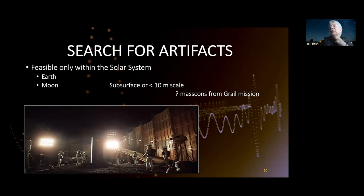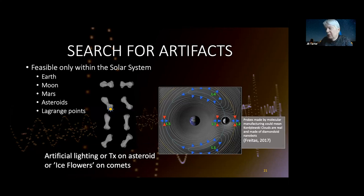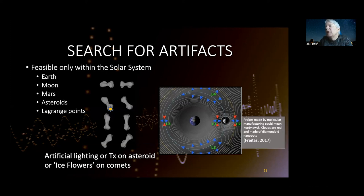On the Moon we haven't been able to search subsurface or for features less than about 10 meters in scale. In the solar system itself we should think about looking for artificial lighting or transmitters on asteroids, ice flowers on comets as Freeman Dyson suggested, and the L4 and L5 Lagrange points. There's been a suggestion that the Kordylewski clouds — which some people see and some fail to find — might be filled with manufactured probes made by molecular manufacturing, like little diamond nanobots.